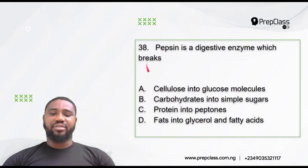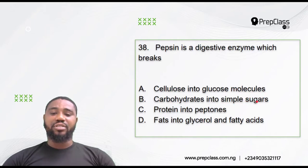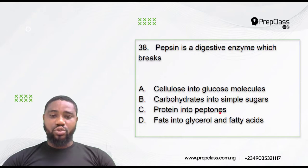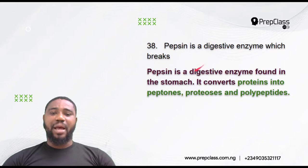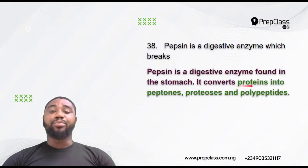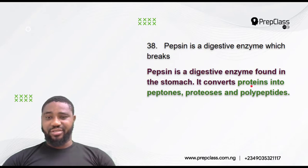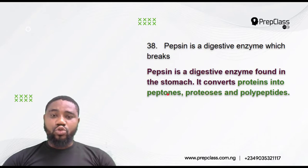Question 38: Pepsin is a digestive enzyme that breaks down — cellulose into glucose, carbohydrates into simple sugars, proteins into peptides, or fats into glycerol and fatty acids? You must know that pepsin is a digestive enzyme found in the stomach. It converts proteins into peptides.